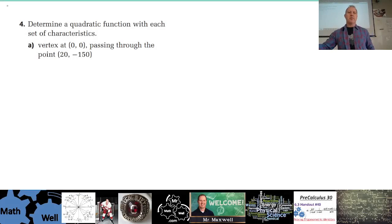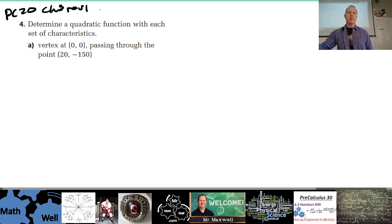All right, chapter 3, review question number 4, PC20 chapter 3 review. Okay, so determine a quadratic function with each set of characteristics.